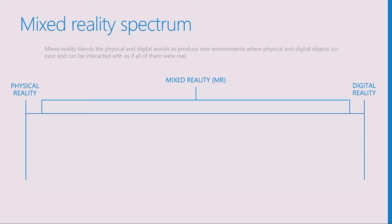A lot of people ask why we aren't calling the devices we make augmented reality or virtual reality devices. We could easily do that, and I won't fault you if you do. But the reason we're thinking about this as a Mixed Reality spectrum is because traditional AR today occupies just one end — adding a light touch of digital people, places, and things to your physical environment. Similarly, VR is on the other end. We want to make investments that help you as developers and businesses cover as much of the Mixed Reality spectrum as possible.